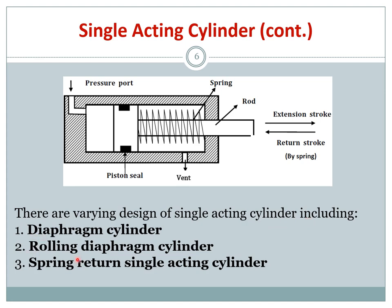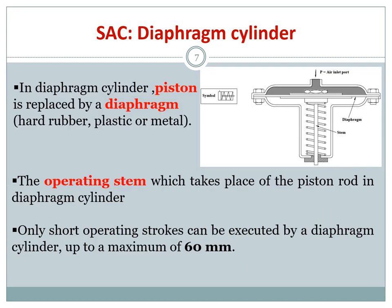There are varying designs of single acting cylinders: the diaphragm cylinder, the rolling diaphragm cylinder, and the spring return single acting cylinder. In the diaphragm cylinder, you have a stem, a cylinder body, and a piston attached to a diaphragm with an air inlet.